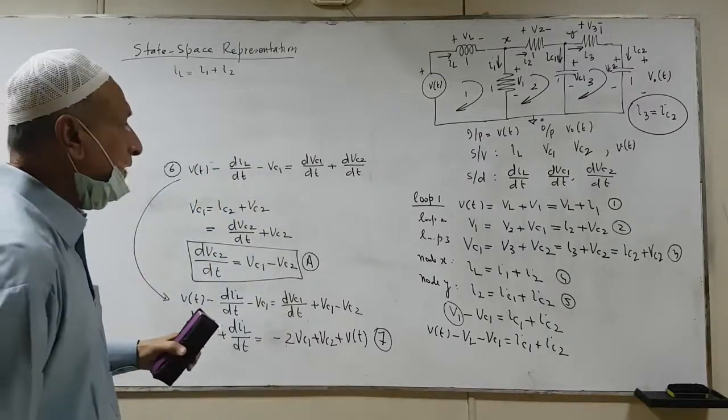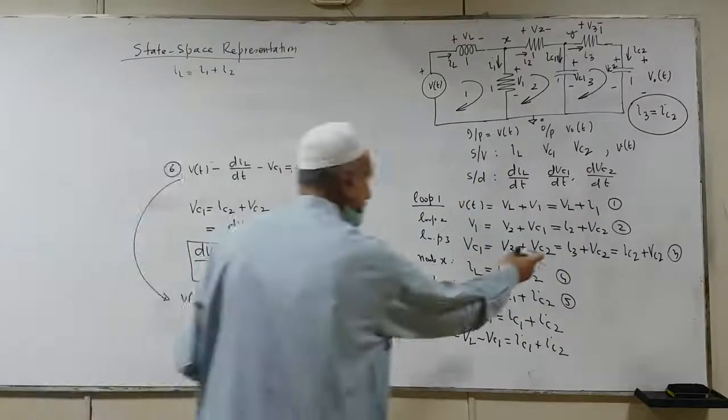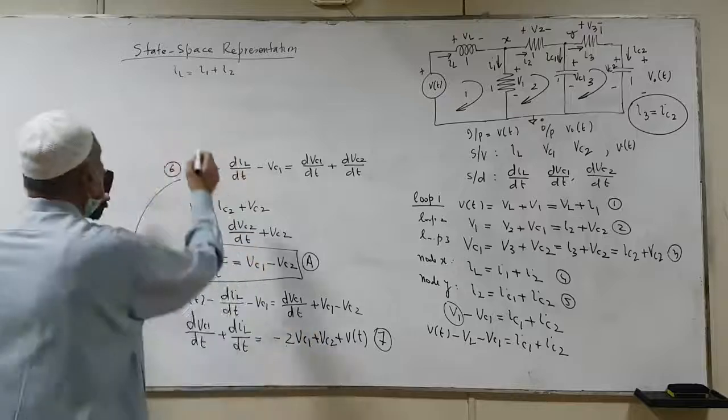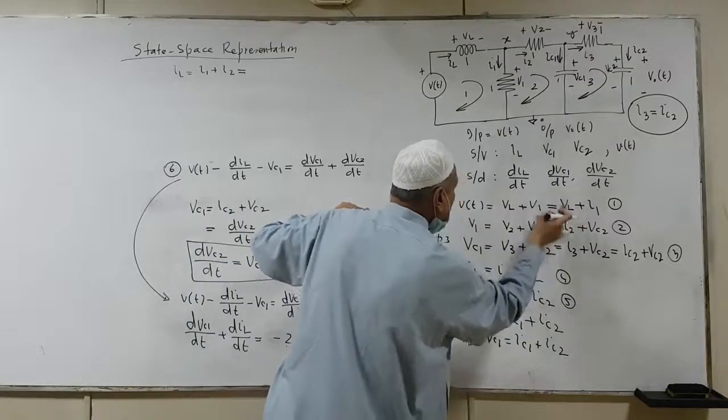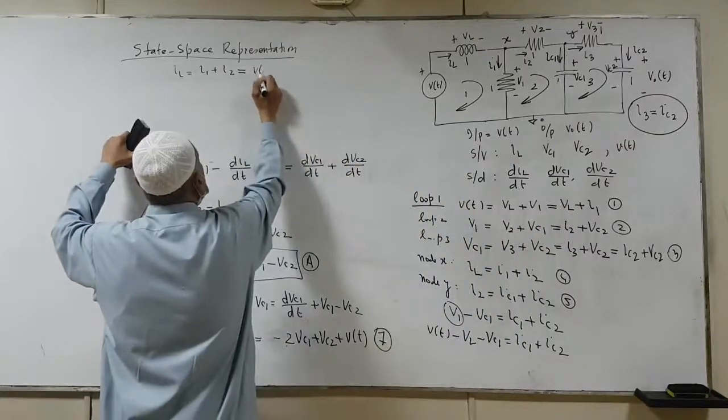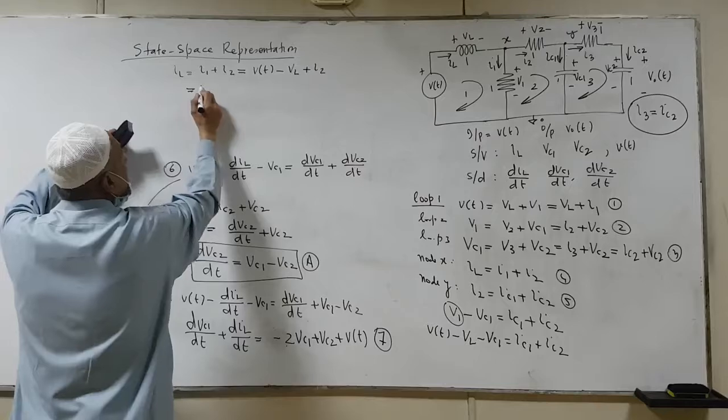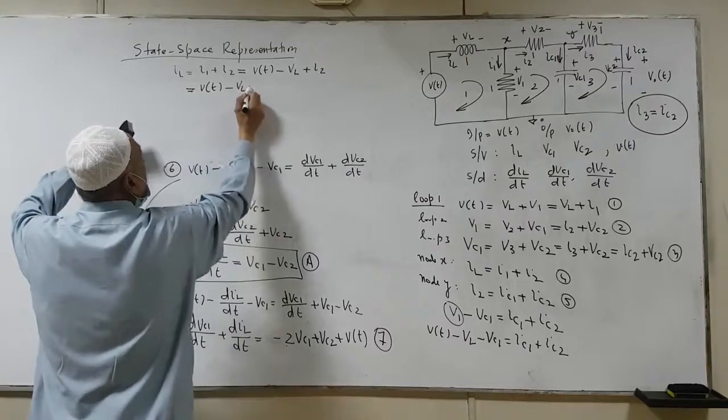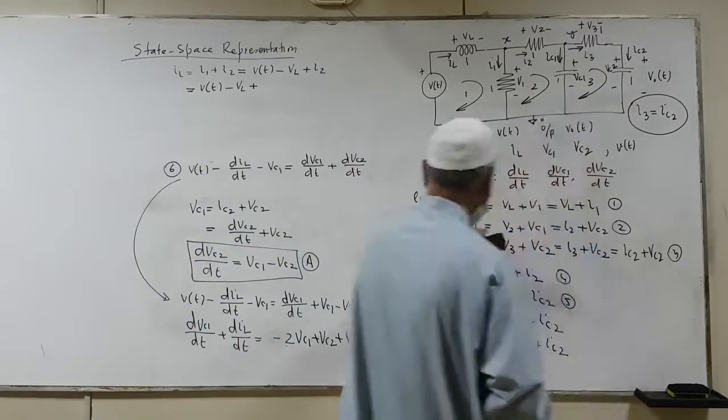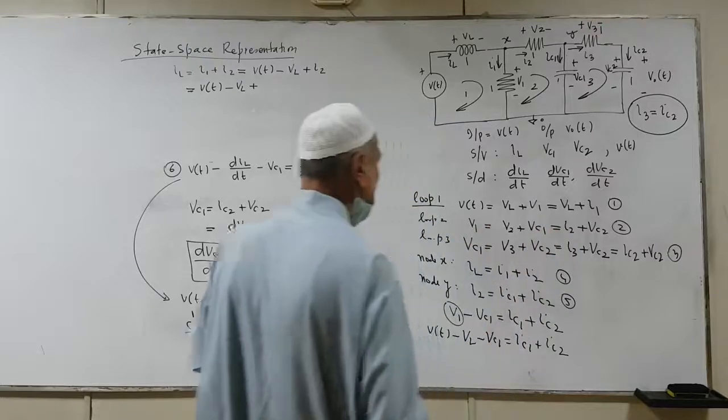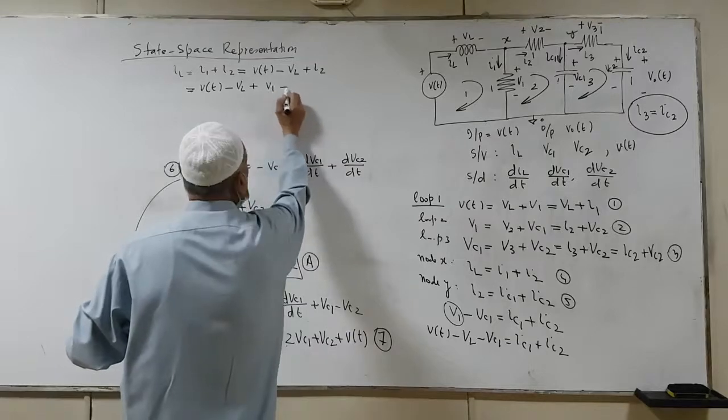Equation 4 says IL is equal to I1 plus I2. Now, let's see what we have. For example, I1 and then of course we have something like I2. So if I say IL is equal to Vt minus Vl plus I2. Now, I go for I2. I2 is equal to V1 minus Vc2. So we can say that this is V1 minus Vc2.